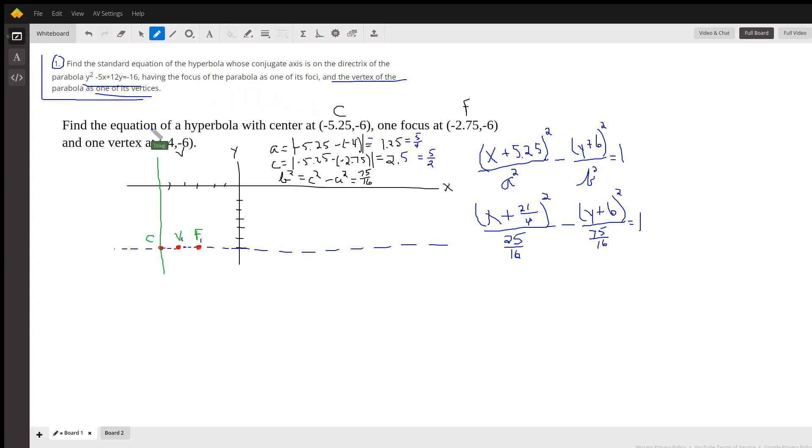Wow. Okay, so that's the same as posing this question right here. Find the equation of hyperbola with center at negative 5.25, negative 6, one focus at negative 2.75, negative 6, and one vertex at negative 4, negative 6. If you knew all that information, you could write the equation of hyperbola.